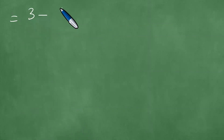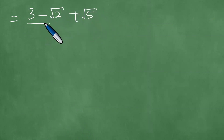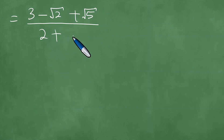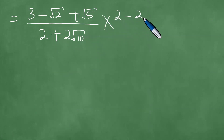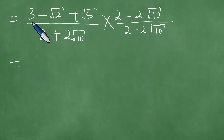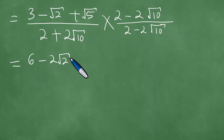So in the end, what we're getting is 3 minus the square root of 2 plus the square root of 5 divided by 2 plus 2 times the square root of 10. Multiply by 2 minus 2 times the square root of 10 divided by 2 minus 2 times the square root of 10. Now we multiply through by 2: so 2 times 3 is 6, minus 2 times the square root of 2, plus 2 times the square root of 5.